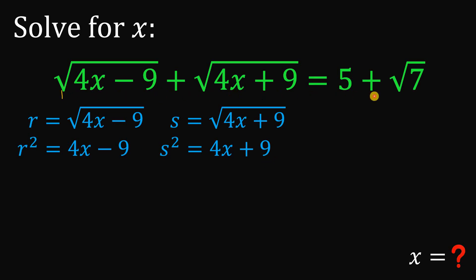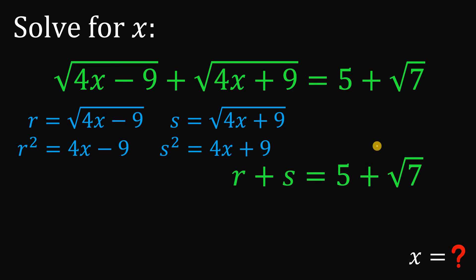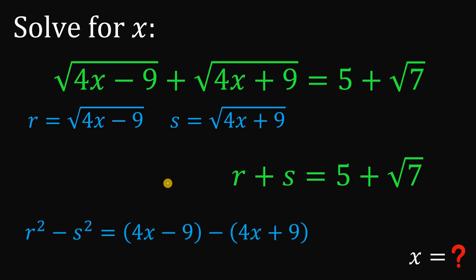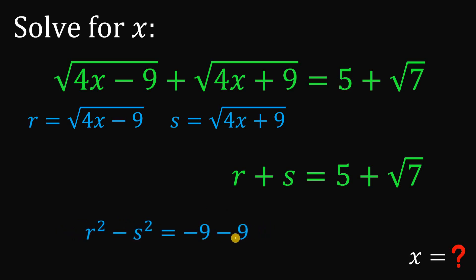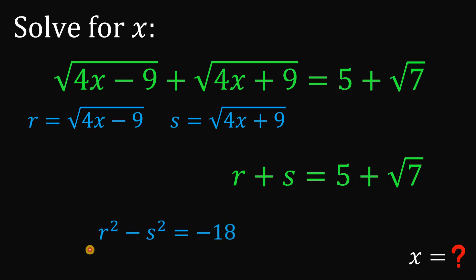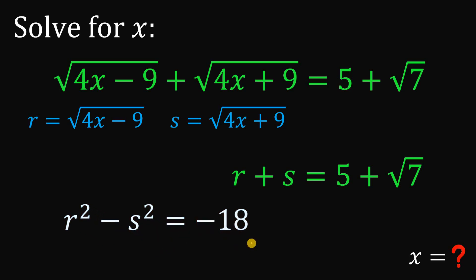Our original equation gives us r plus s equals 5 plus square root of 7. Now, if we subtract the two squared equations, r squared minus s squared, notice that we can eliminate 4x. If we distribute the negative sign to 4x plus 9, we get 4x minus 9 minus 4x minus 9. The 4x terms cancel to 0, so the right-hand side becomes negative 9 minus 9, which is negative 18. Therefore, r squared minus s squared equals negative 18.